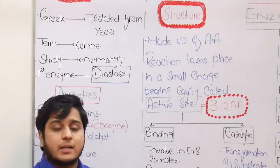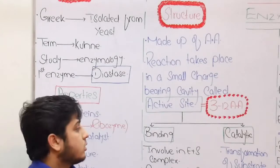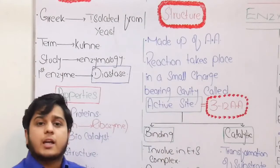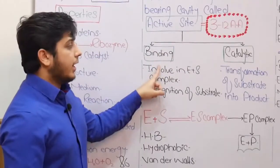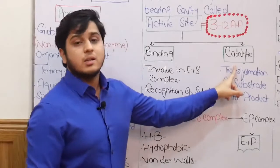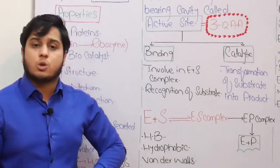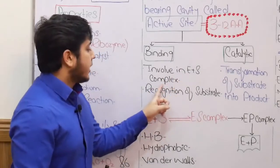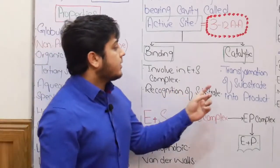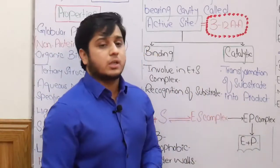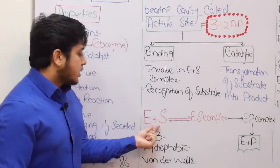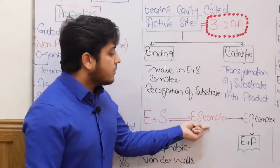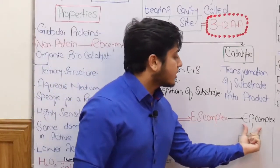For MCQs, remember that there are 3 to 12 amino acids present in the active site. The active site has two further regions: one is the binding site and the second is known as the catalytic site. The binding site is where the substrate molecule binds. The catalytic site is where substrate is converted into products. When the enzyme and substrate bind, there is formation of an enzyme-substrate complex, which is then converted into an enzyme-product complex.